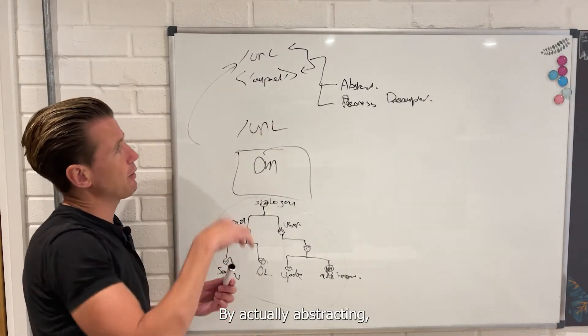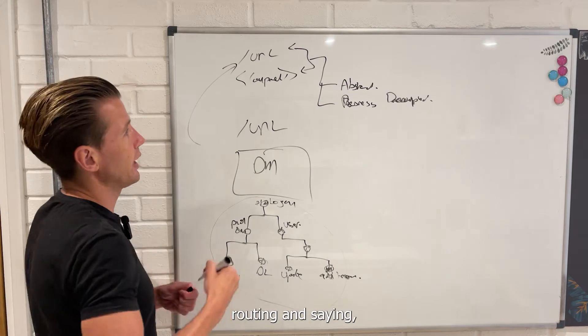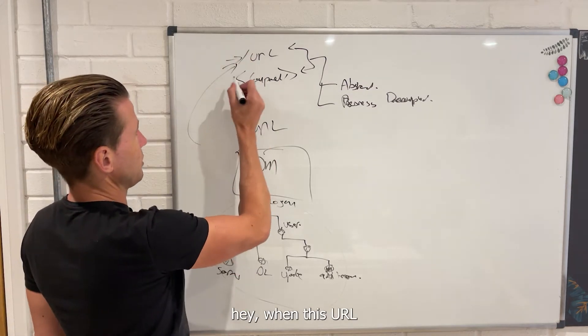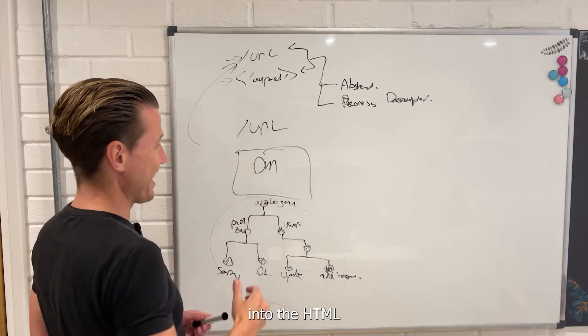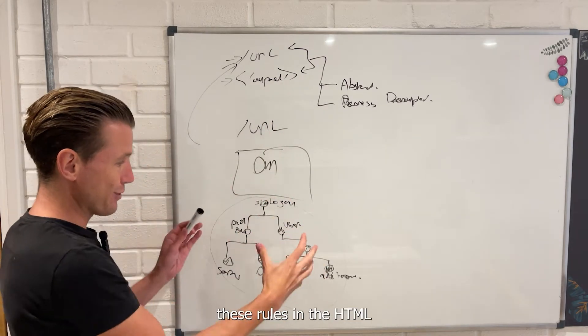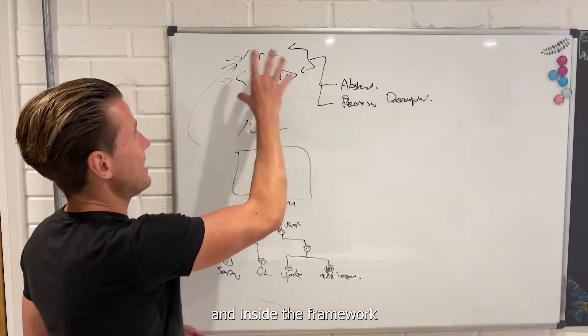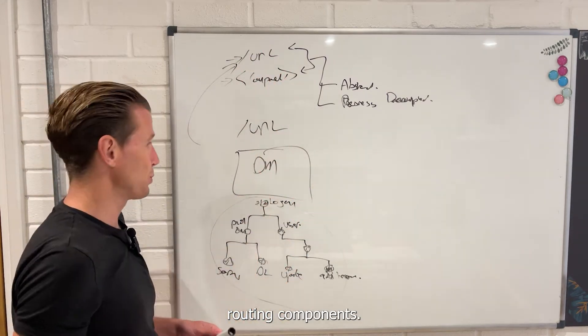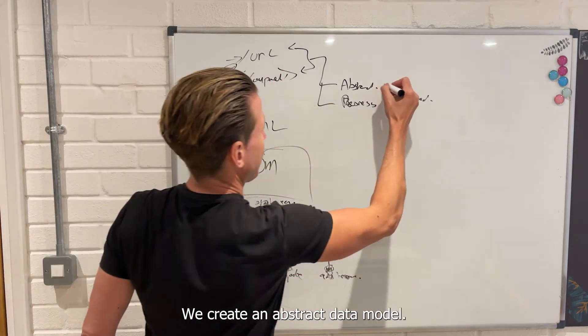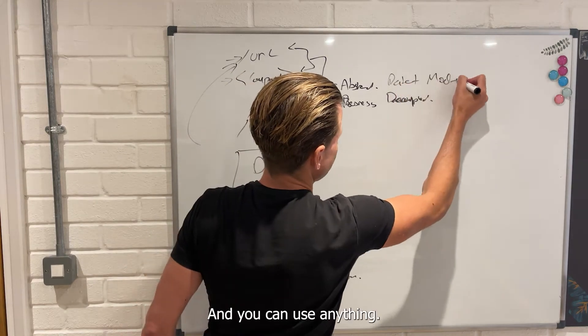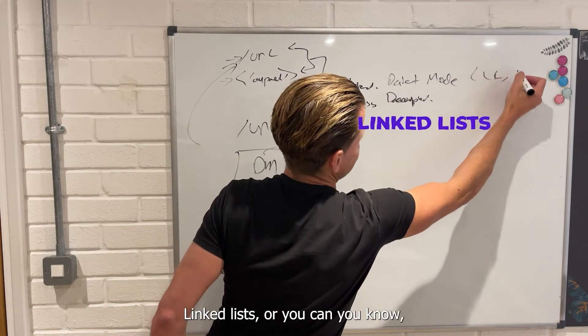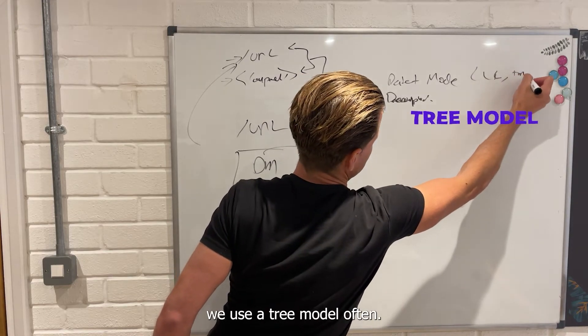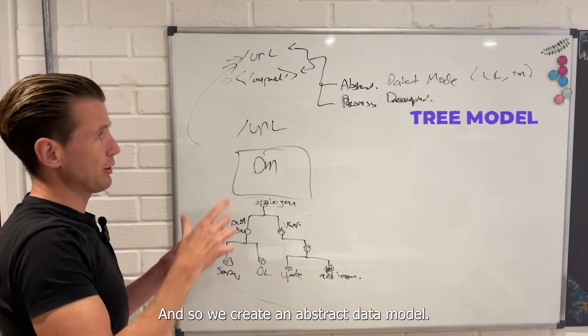So by actually abstracting, instead of using just direct routing and saying when this URL appears we show this component, and then we put a load of if statements into the HTML and basically represent these rules in the HTML and inside the framework routing components, what we do is we shift everything out. We create an abstract data model. You can use anything, you can use things like linked lists, or you can use a tree model often.